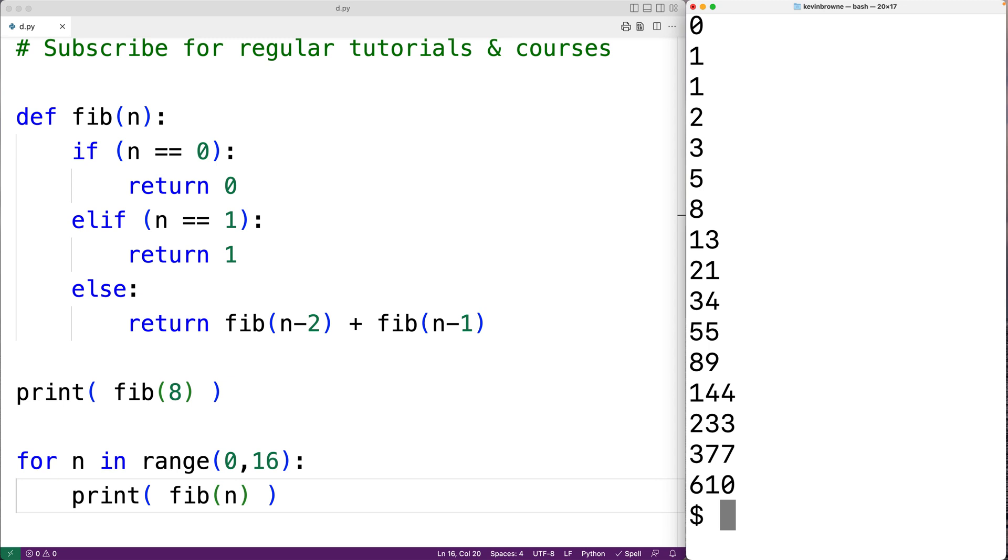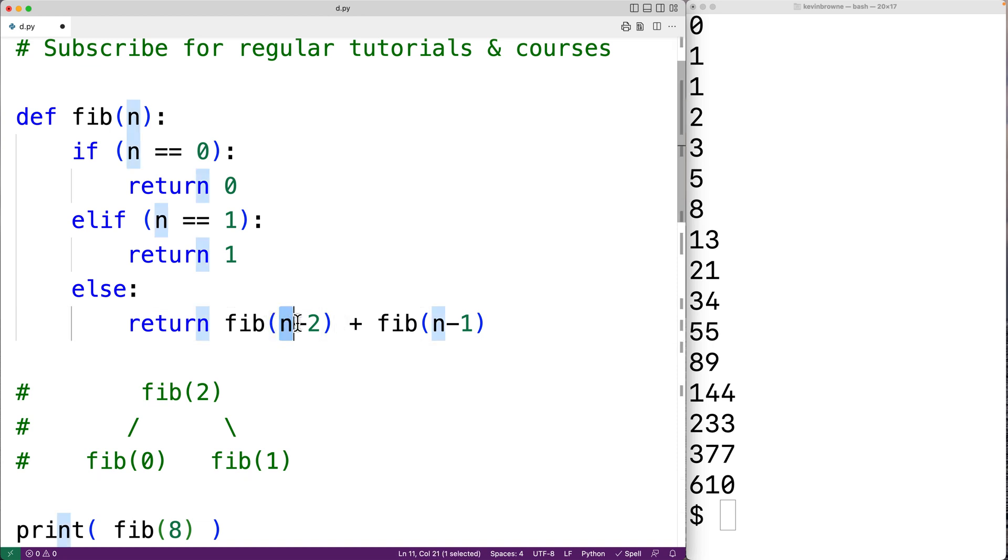To help understand how the algorithm is working, it might help to visualize some small cases. So for example, let's say we call the function with 2. That means fib is going to be called with 0 here and 1 here.